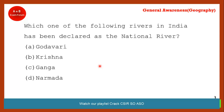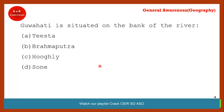Which of the following rivers in India has been declared as a national river? This is a very simple one — everybody knows Ganga is our national river. Ganga is the correct answer.